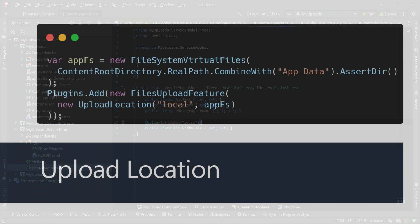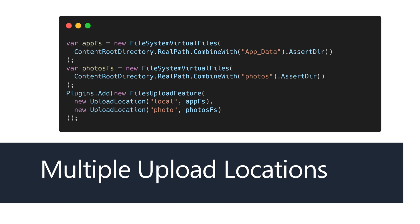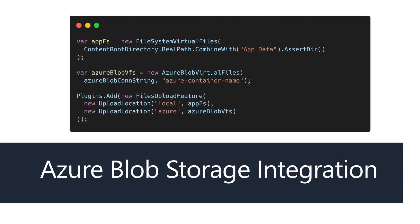This brings us to the file uploads feature plugin itself, which is where we declare the upload location. The file uploads feature plugin can take multiple upload location configuration options. Each upload configuration has an associated name and an IVirtualFiles provider, which is the interface used to manage the file operations. ServiceStack has several built-in implementations including file system, AWS S3, and Azure Blob Storage. This makes it easy to swap and change the backing storage solution as well as have multiple upload locations configured at the same time.